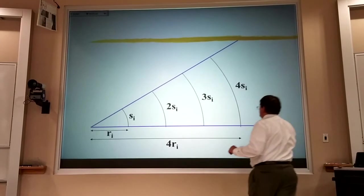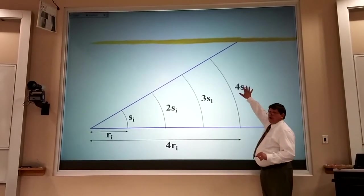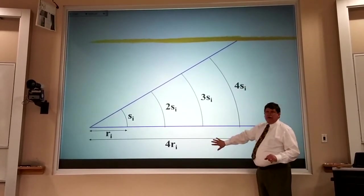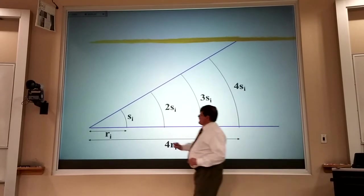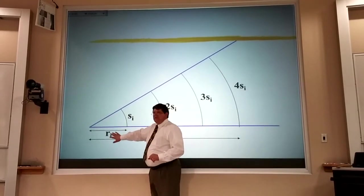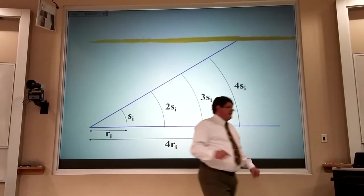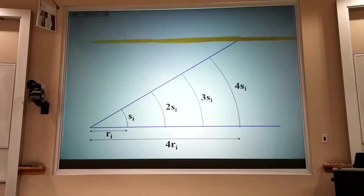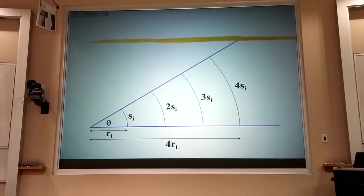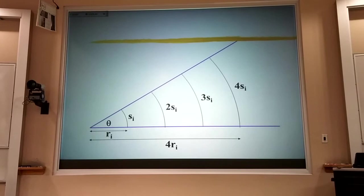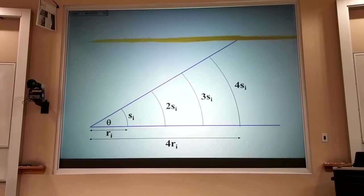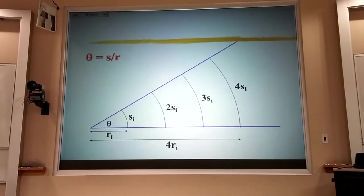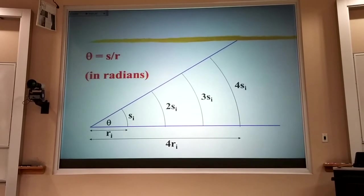And so, it doesn't matter whether I divide this arc length by this radial distance, or whether I divide this arc length by this radial distance. In either case, I will get the same number. I call that number theta, the angle between those two lines. That is the definition of the angle in radians.